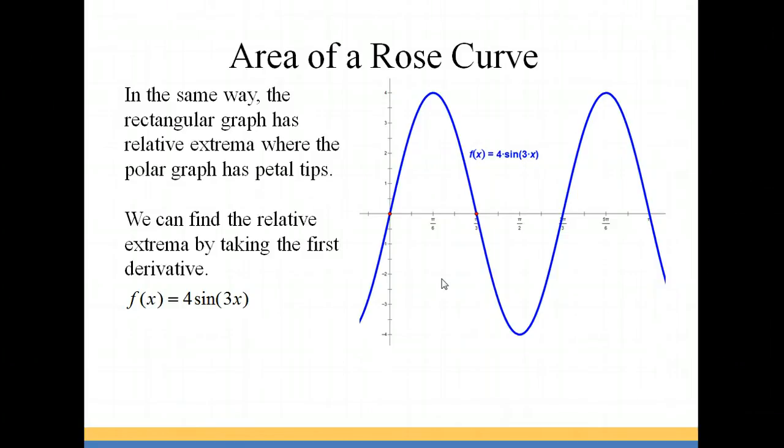So using the function f of x equals 4 sine 3x, we can take our first derivative, and that gives us 12 cosine of 3x. Then in order to find the maximum or minimum points, we're going to set it equal to zero to find where our tangent lines are horizontal, or where they have slopes of zero.